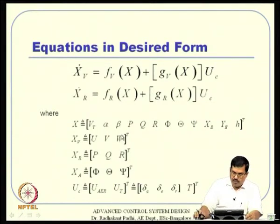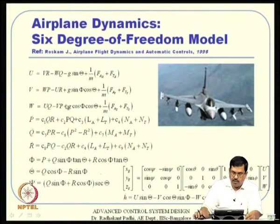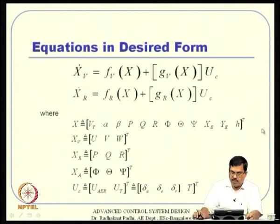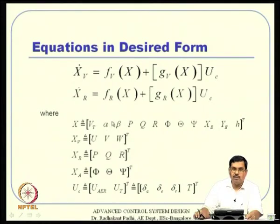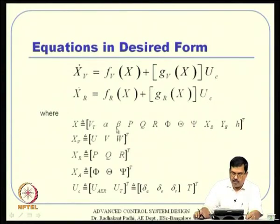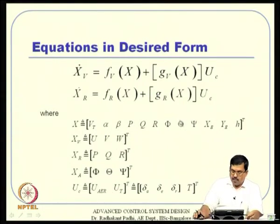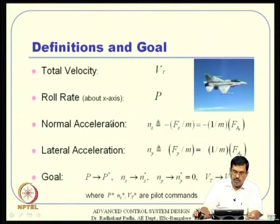We are talking about full system dynamics without any linearization. The entire state vector consists of all these quantities. Alternatively, we can use vt_dot, alpha_dot, beta_dot instead of u_dot, v_dot, w_dot. Using vt, alpha, beta equations corresponds to the wind frame, while using u, v, w corresponds to body frame equations. Both representations are available and can be exploited interchangeably.